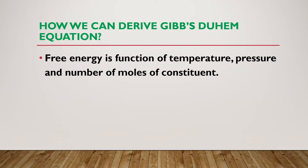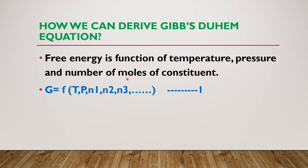Free energy is a function of temperature, pressure, and number of moles of the constituents. This we have seen in our last lectures. So the Gibbs free energy is always a function of three quantities: temperature, pressure, and number of moles. Mathematically we write it as G is a function of temperature, pressure, N1, N2, N3 — that is the number of moles for component 1, component 2, and component 3.